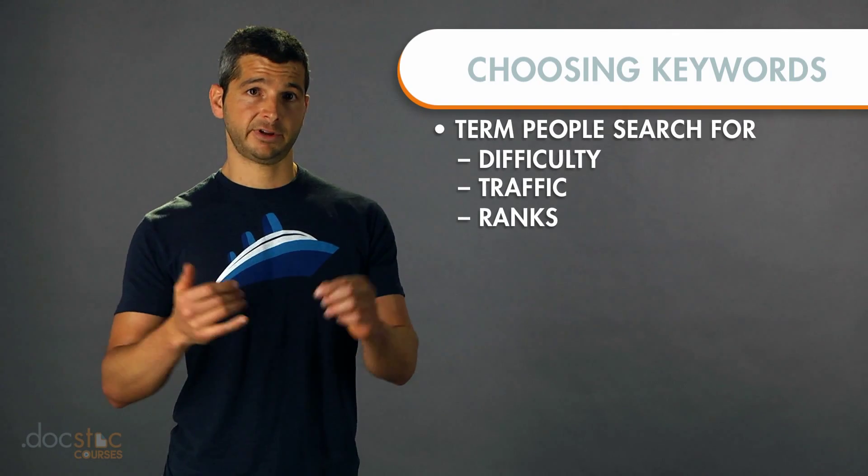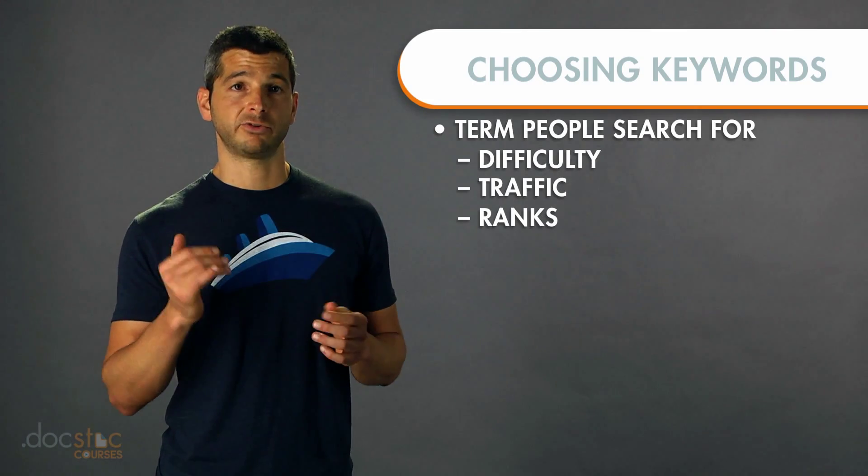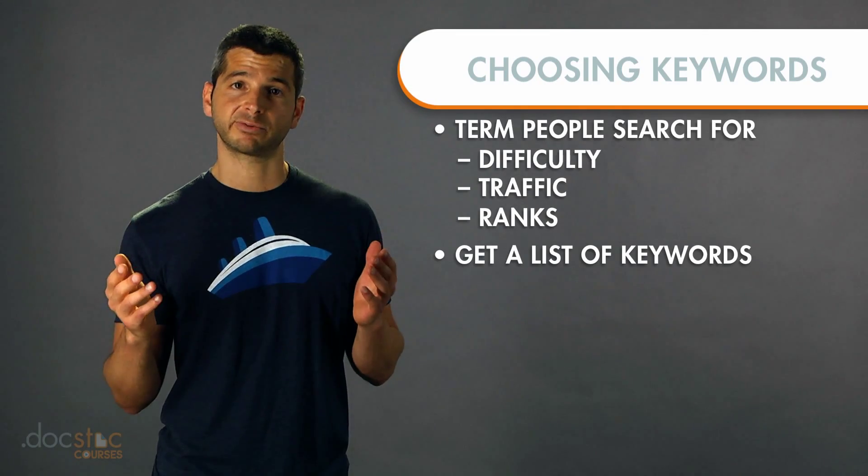Now that we know the terms and have a tool to use, let's talk about the actual process. Number one, you're going to want to get a list of keywords. If you don't have any keywords yet, the simplest way is to look at your competitors. Find an app that's doing something similar and performing well, and use the tool mentioned to research the keywords used by your competitors. Grab that list, tweak it to make it relevant to your specific app, add extras for features and customizations, and then start analyzing these keywords.